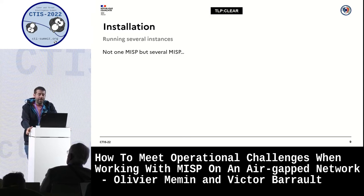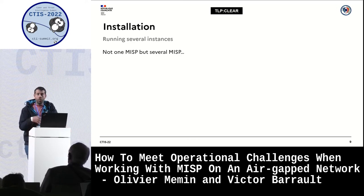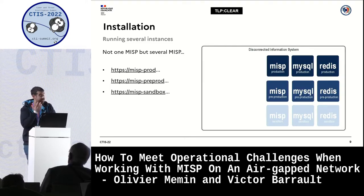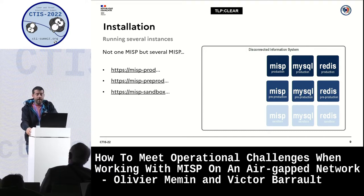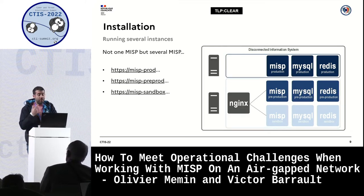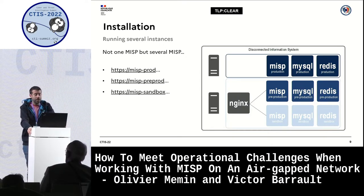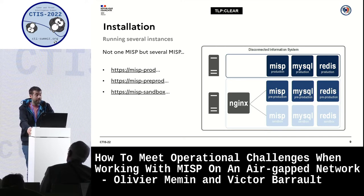Actually, we do not only need one MISP, but several MISP instances running in parallel — not really for performance, but rather to segregate usages. We intend to have a production instance, but also a pre-production instance to test updates, and a sandbox instance for analysts to train on our IOC capitalization processes without affecting production. To limit the number of servers, we enriched the Docker Compose file to integrate an Nginx container acting as a reverse proxy in front of MISP instances.